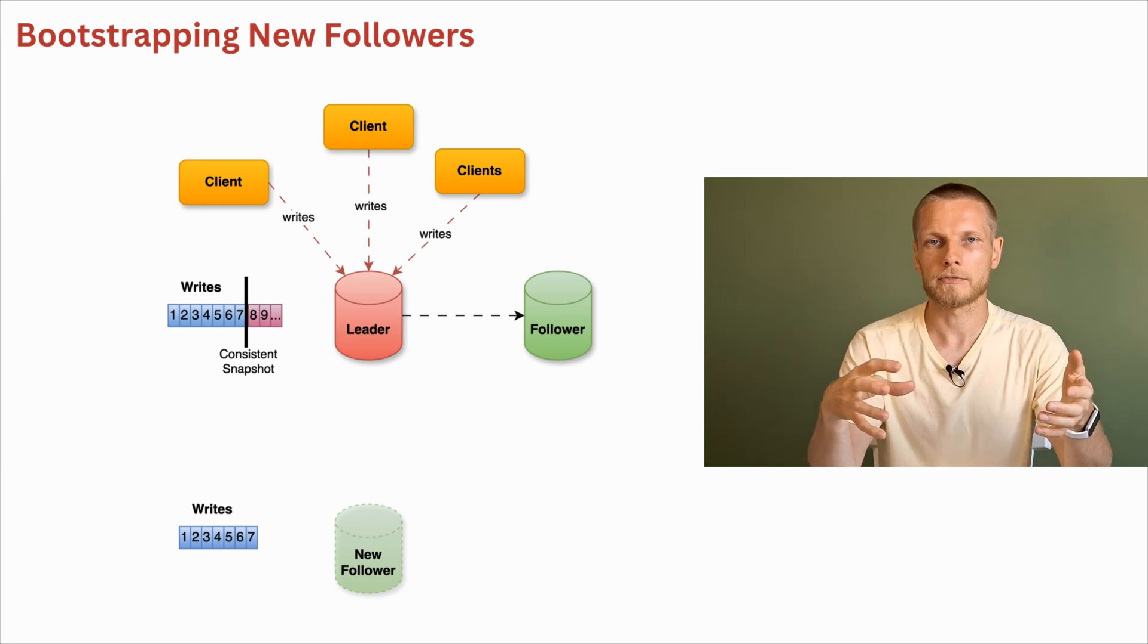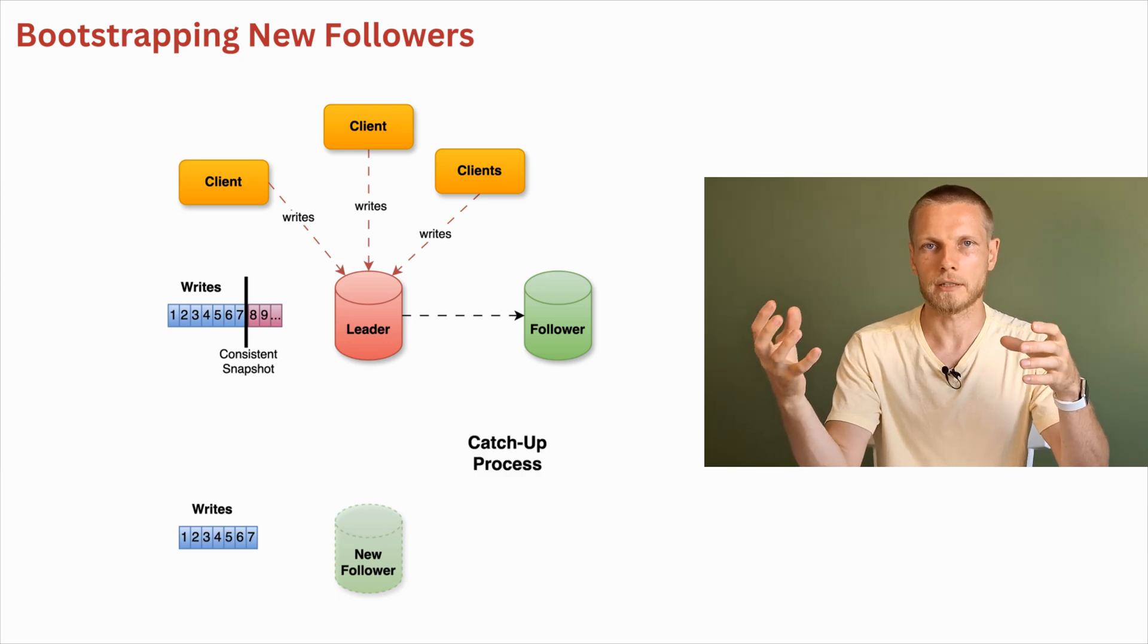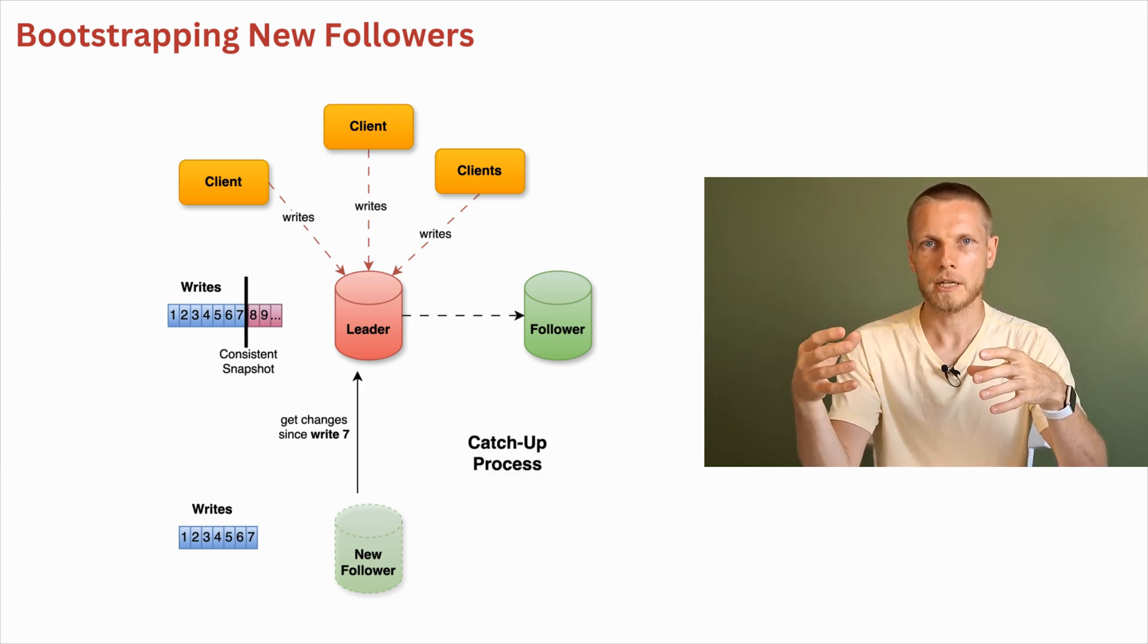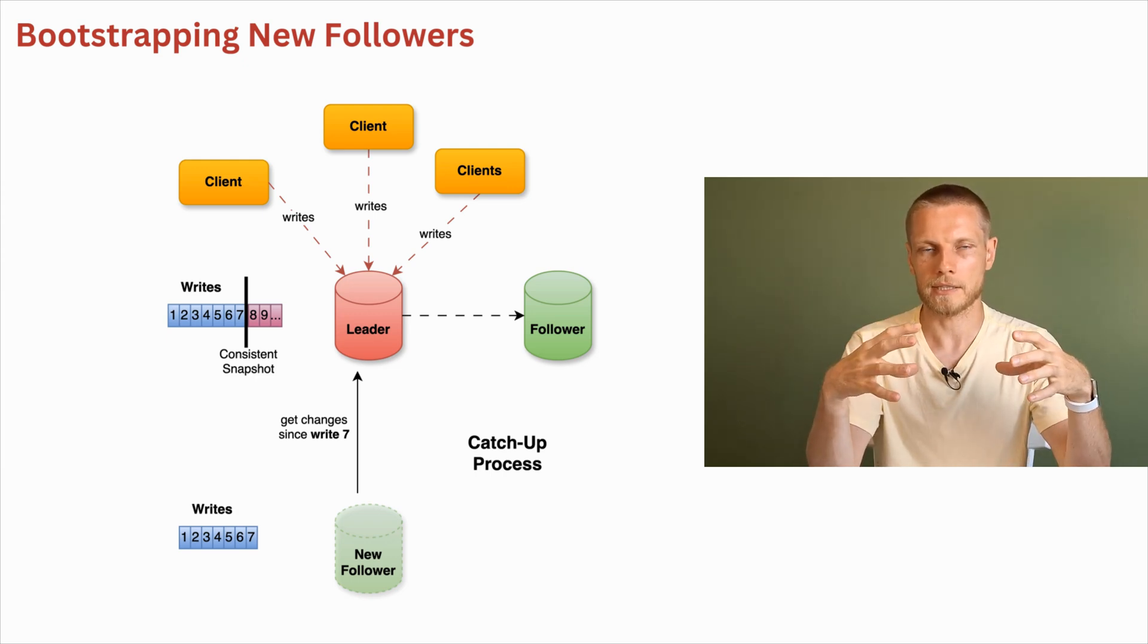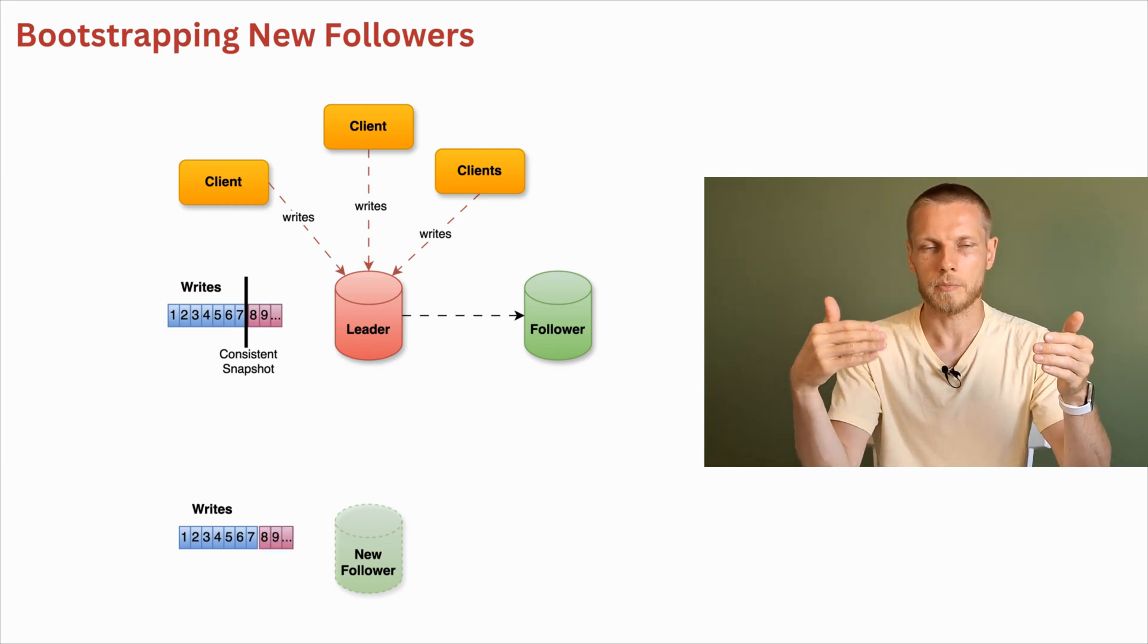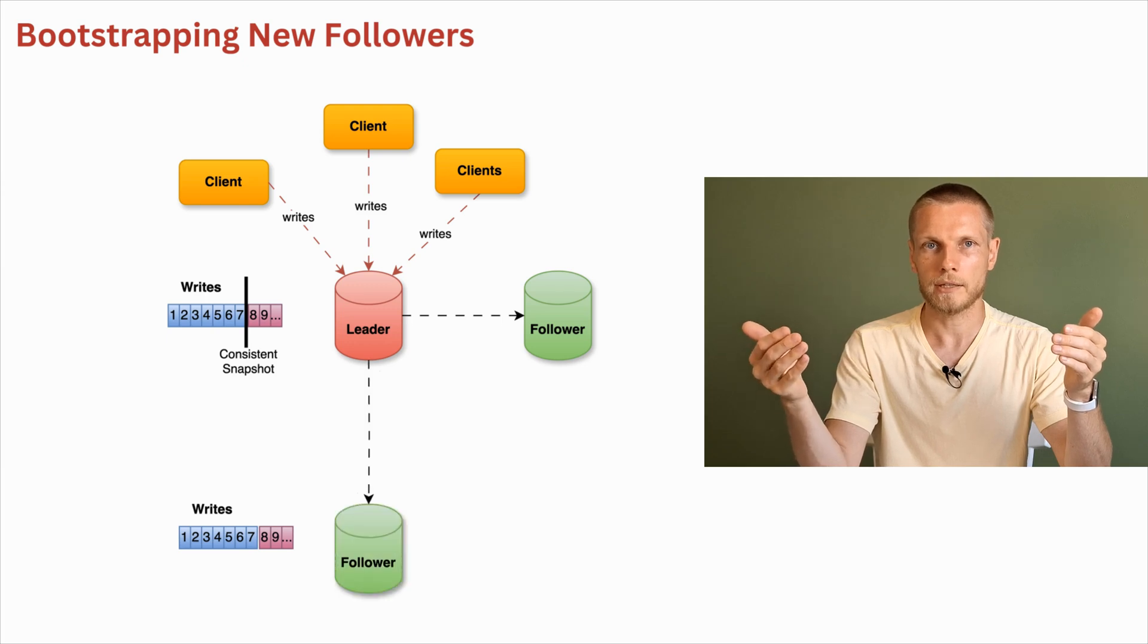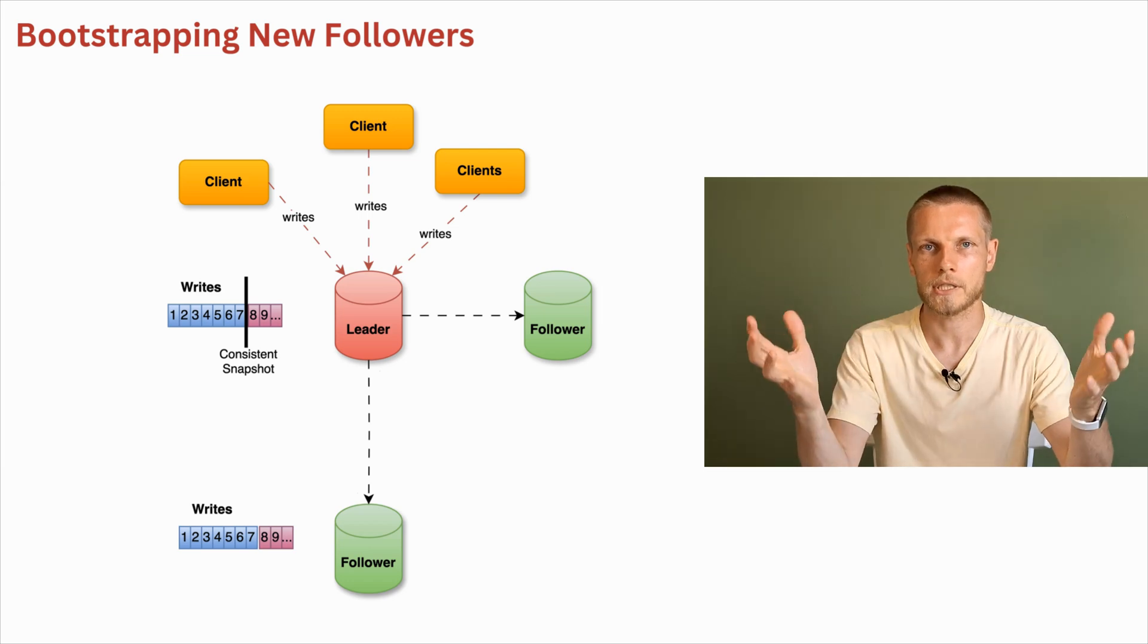Usually leader has some kind of replication log and in the consistent snapshot we have some exact position in this log. So when the follower has the snapshot and it starts, it requests from the leader all writes made since this consistent snapshot was created. Then follower receives all of those writes from the leader, applies them and after that it's up-to-date. We say that it's caught up and it can receive real-time replication updates and now we have system with one more follower.